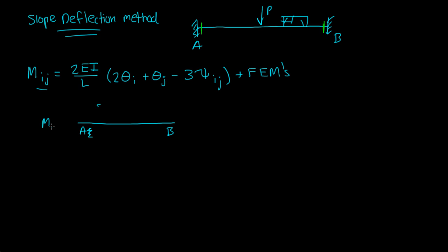And this would be M_AB, right? I, J would be AB because it's on A, so that's why A comes first. And then on this side it'd be M_BA, right, because it's on side B of the member. So it's flipped, M_BA.